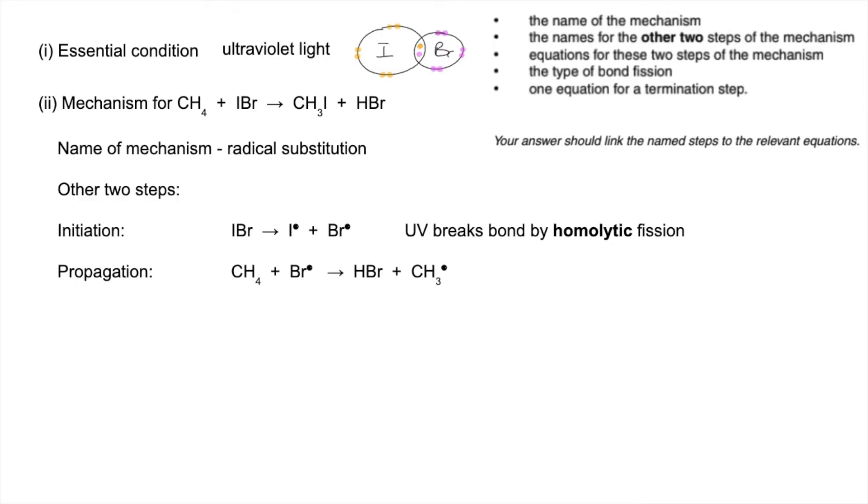So the other step is propagation, and these occur in a pair of steps. So the first one would need to look like this, and that's because we've got to produce hydrogen bromide. So of these two radicals, it's the bromine radical that's going to attack the methane. We're going to take one of the hydrogens and the electron and form HBr. And that's going to leave over a methyl radical.